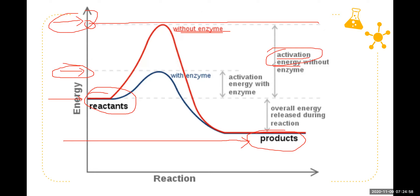The activation energy can be gained through the environment, but the problem is that without an enzyme it would take a lot of heat and time to reach that activation energy for the metabolism to occur. With the enzyme, it lowers this activation energy so that even in a regular cellular environment — even without extreme heat — the process can proceed. Without the enzyme, a lot of heat would be needed, and if the heat is too high, the cell would die because proteins would denature and processes would stop.